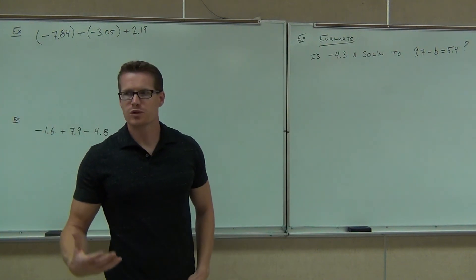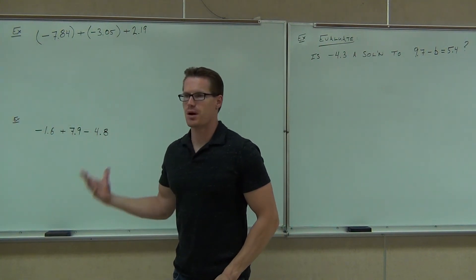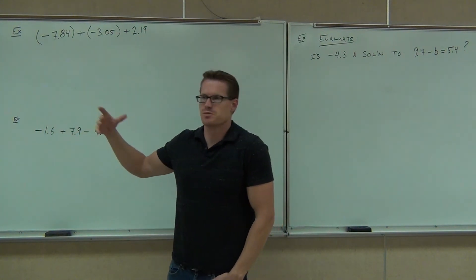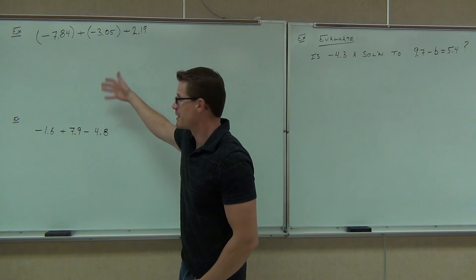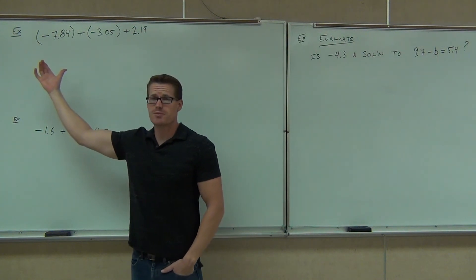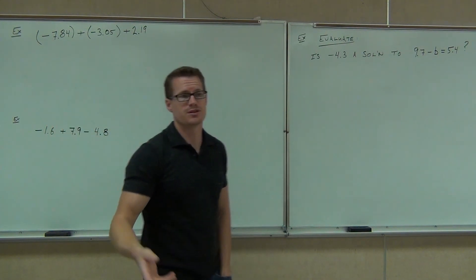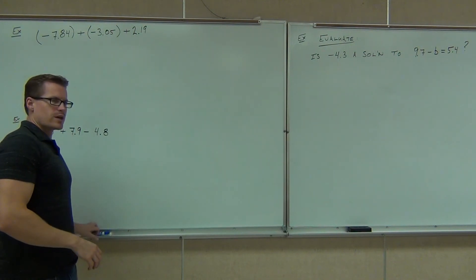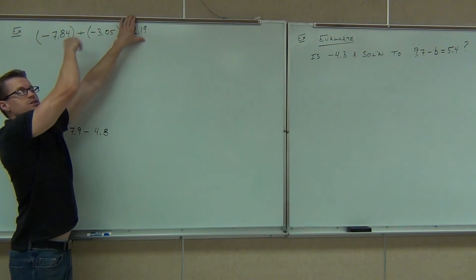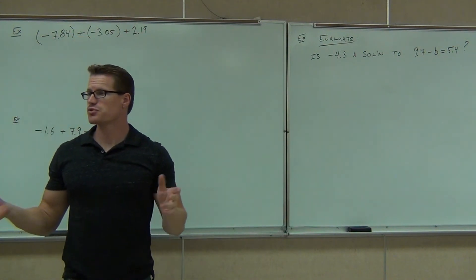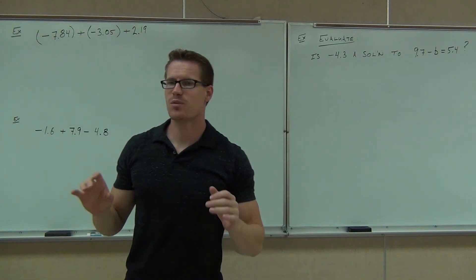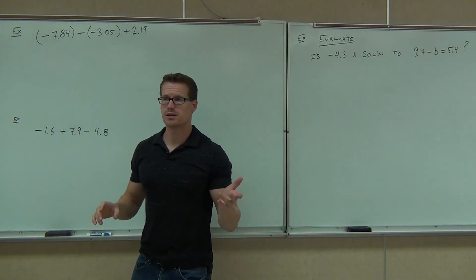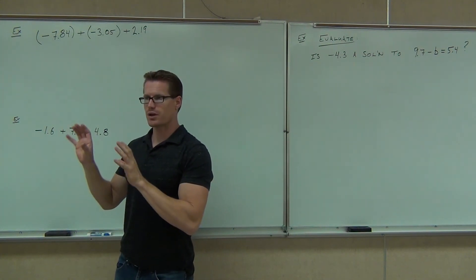So when you're dealing with these multiple-step problems, deal with it like you would any order of operations — go through parentheses, exponential, multiplication, division, addition, subtraction. Here we only have addition and subtraction, so do it two at a time from the left. When we deal with this first problem, we're going to ignore that 2.19 for just a second and deal with just these two. It's set up for the addition rule already. Are the signs the same or different? The same. Are we going to add or subtract? Add. So off to the side we're going to add those two numbers.